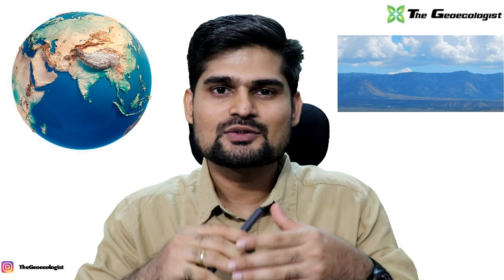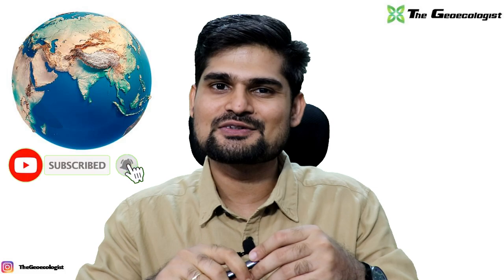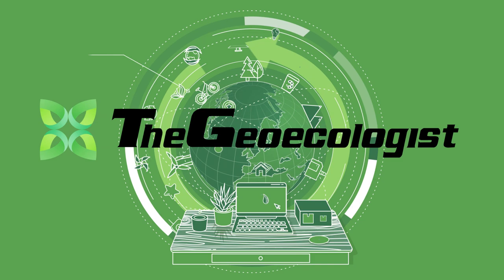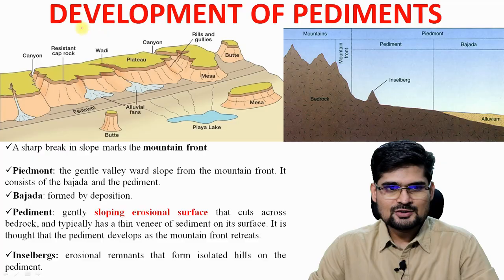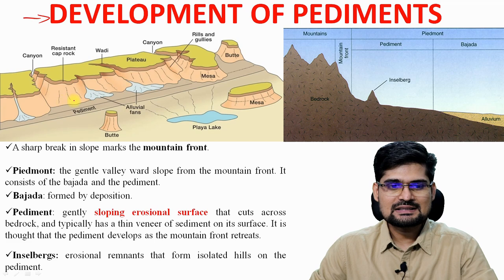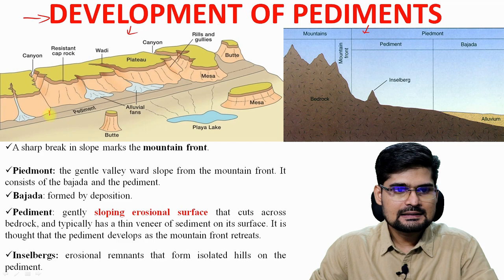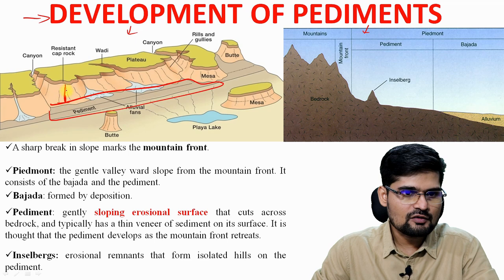Don't forget to subscribe to our channel and also do share the videos with others as well. Now let's learn about the development of these pediments. Here we have two images, one and two. You can observe where the pediments are — this particular surface at the foothills, at the foot of this particular hill or tableland. This particular land is called pediment.